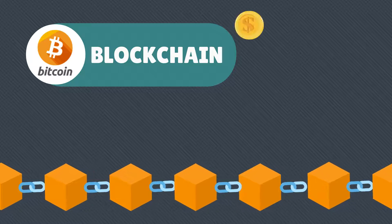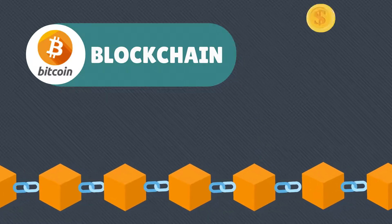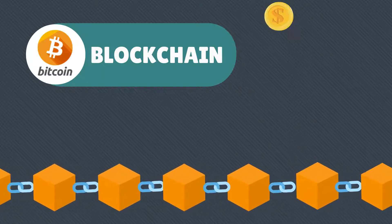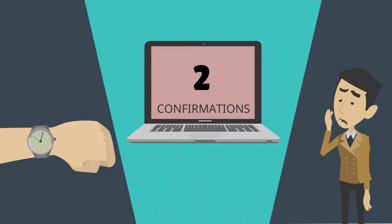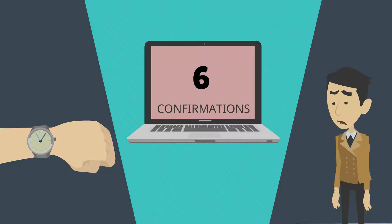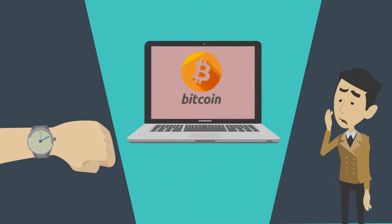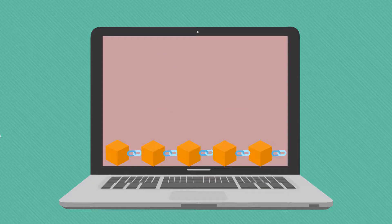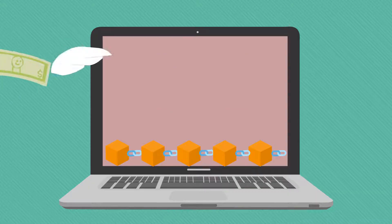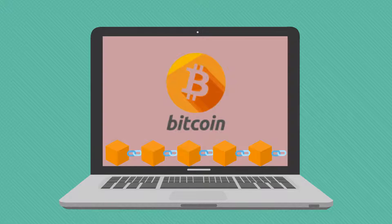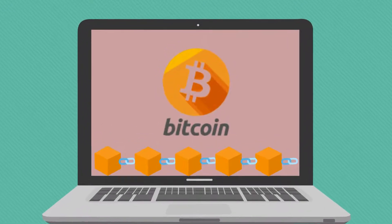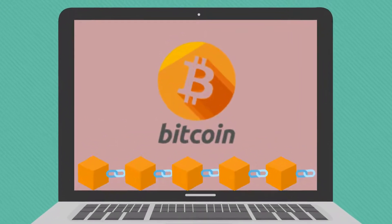Have you wondered how transactions get approved in Bitcoin blockchain, and why you need to wait for three to six confirmations for the transactions to appear in your wallet? This video attempts to explain how a Bitcoin transaction is approved and the process behind it.